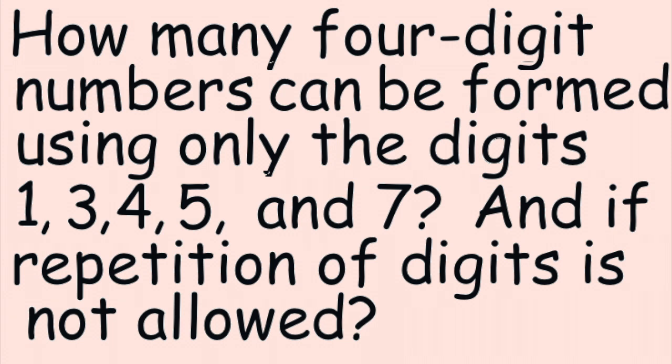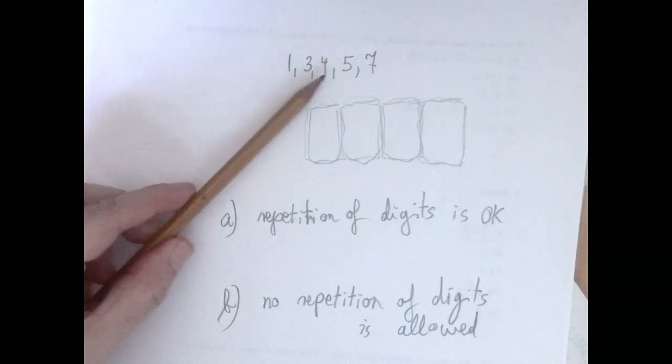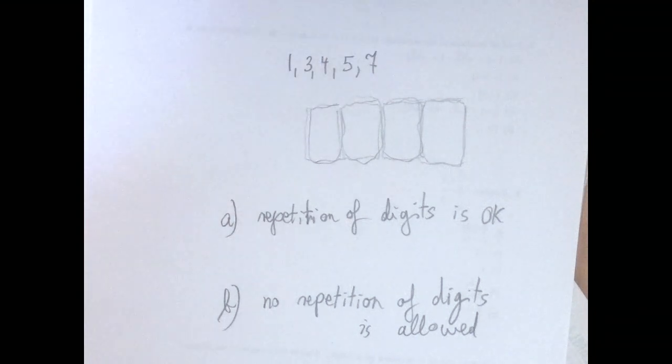This is a combinatorics question. The question is, given these digits, and we can only use these digits, how many four-digit numbers can be formed using only these digits?